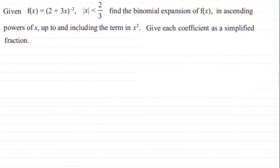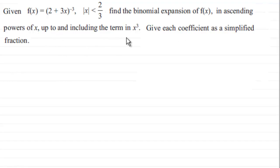Here we have an example on the binomial expansion. I'll give you a moment to pause the video. We have the function f(x) = (2 + 3x)^(-3), where |x| < 2/3 — in other words, x can be any value greater than minus two-thirds but less than two-thirds. Find the binomial expansion of f(x) in ascending powers of x up to and including the term in x³, giving each coefficient as a simplified fraction.